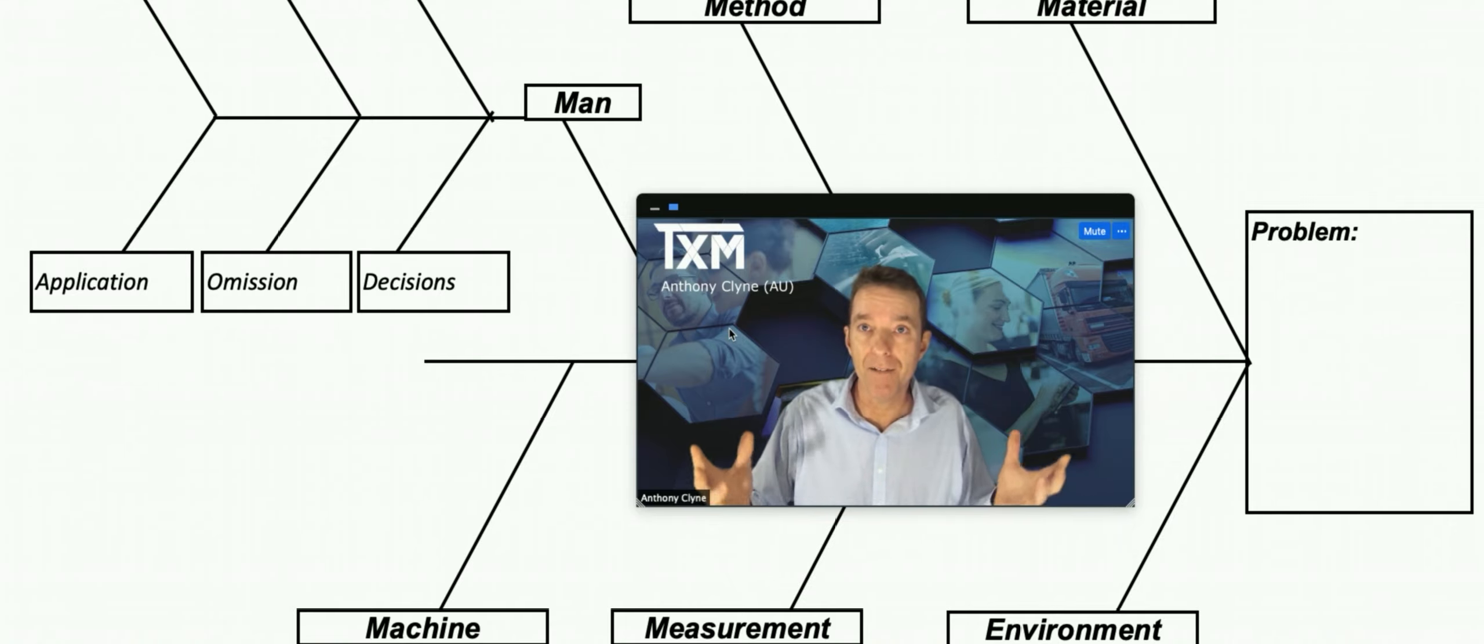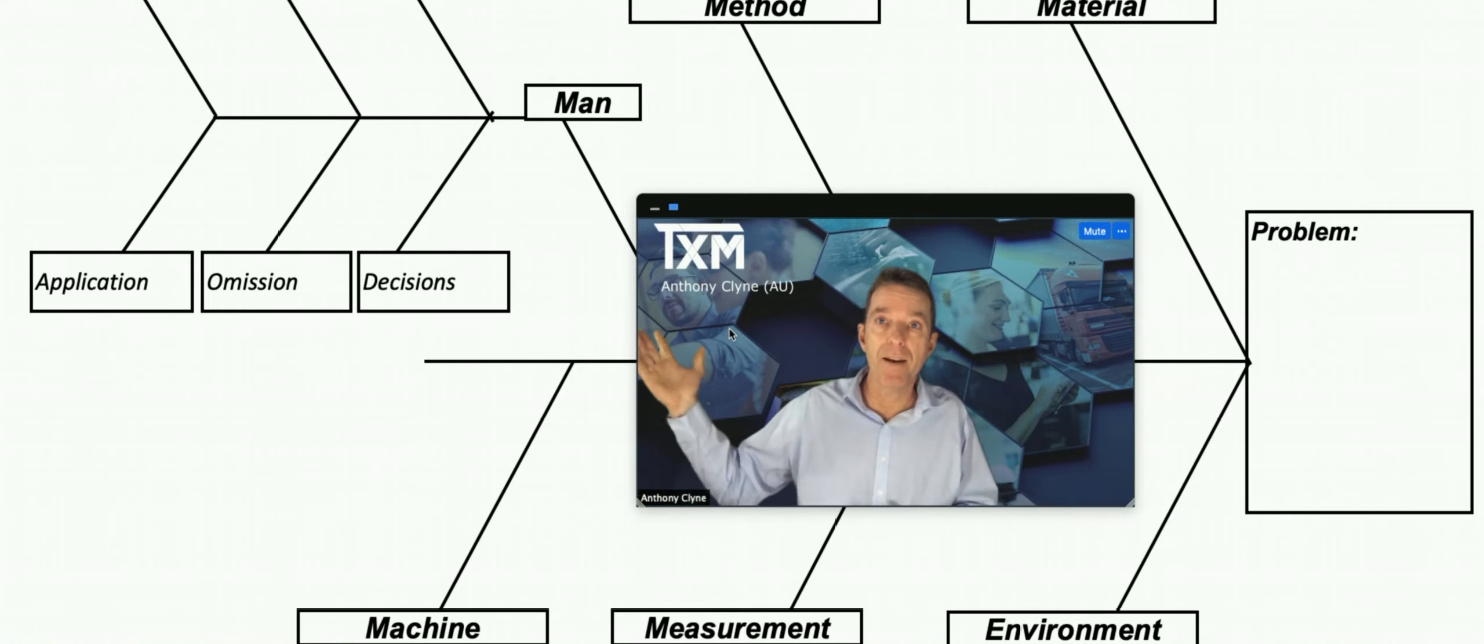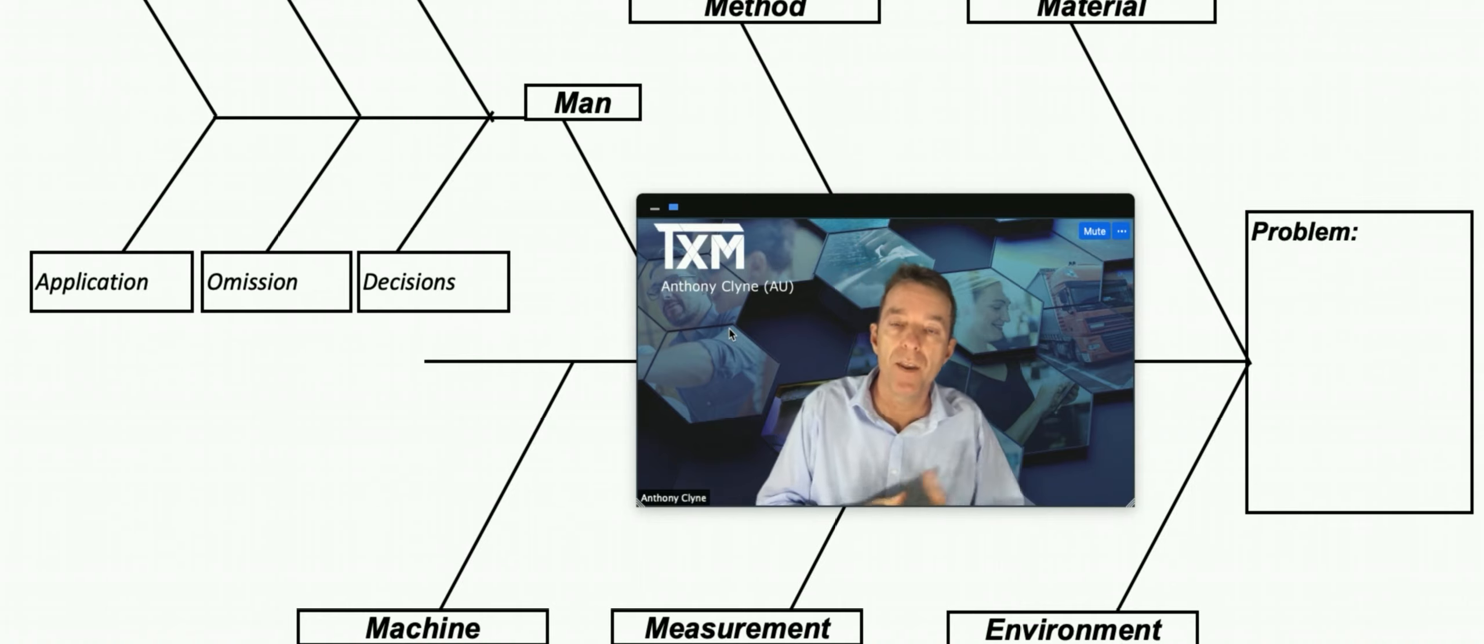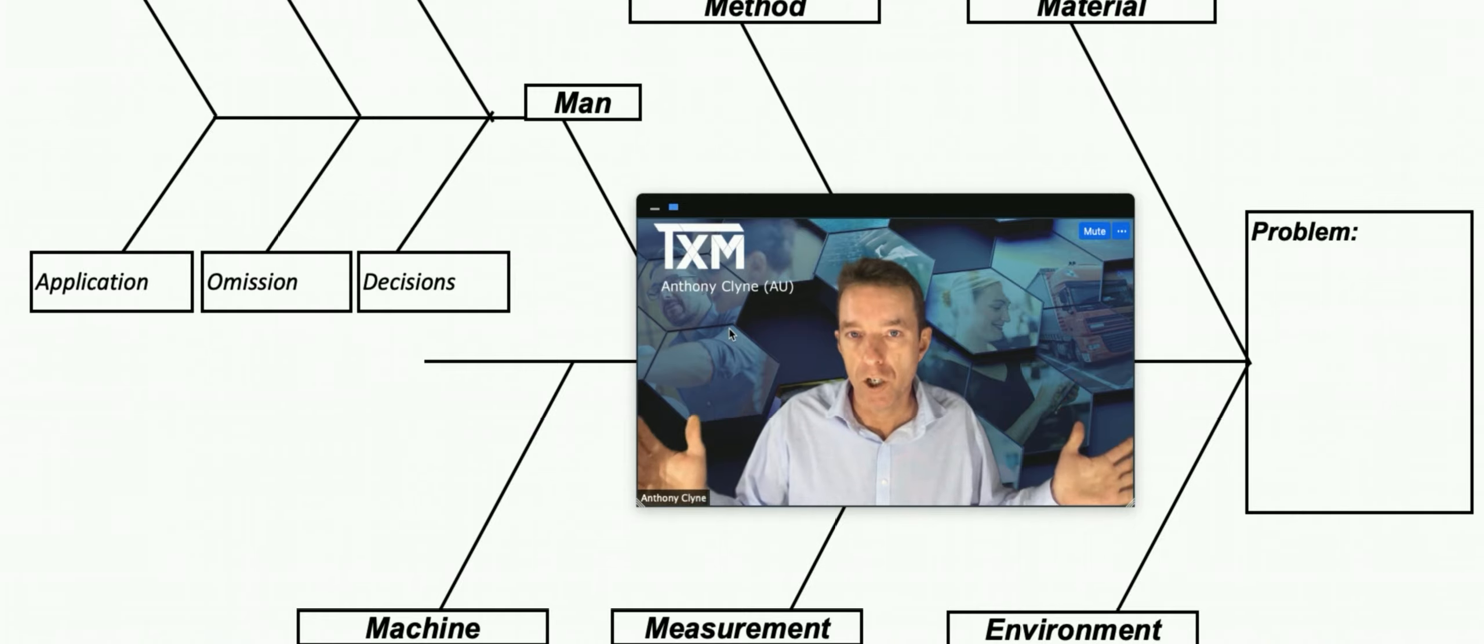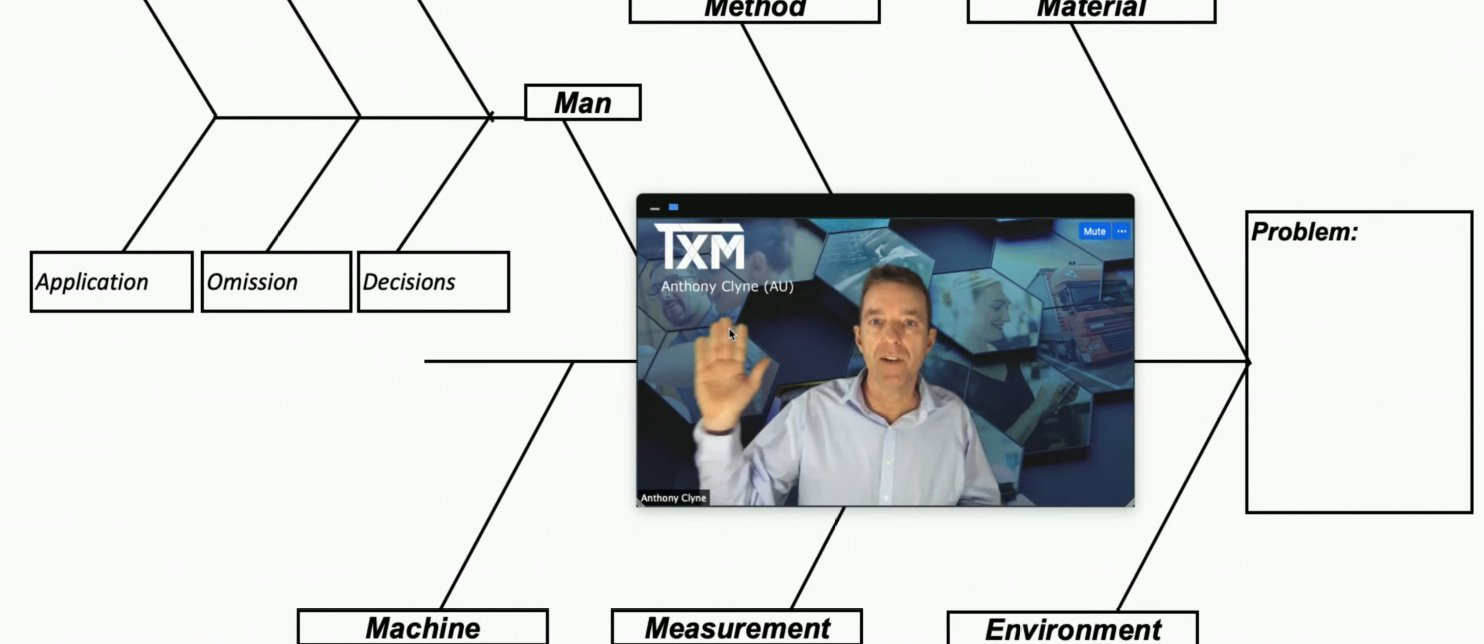So they're what used to be six categories of the fishbone, it's now expanded to be 12 or 11 depending on how you count the people ones. That acts as a checklist to ensure that the people in the problem-solving workshop or session consider all of those possible causes when they're brainstorming and writing down what they think the causes are.